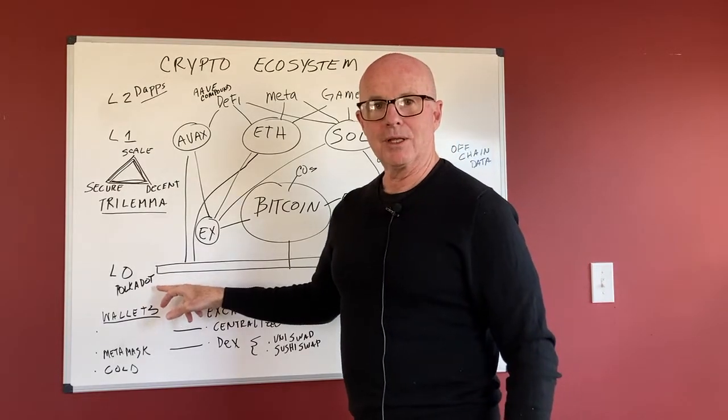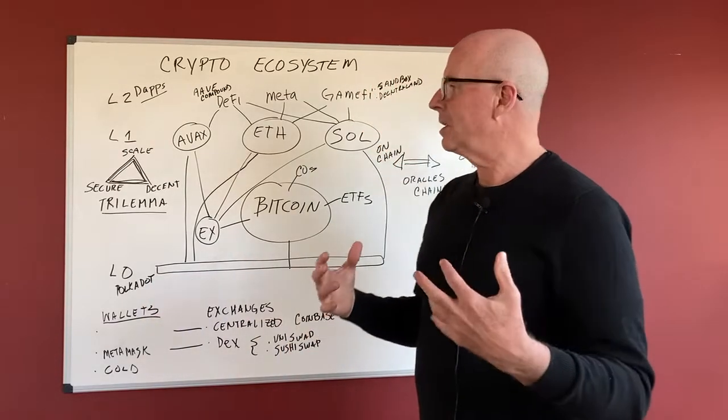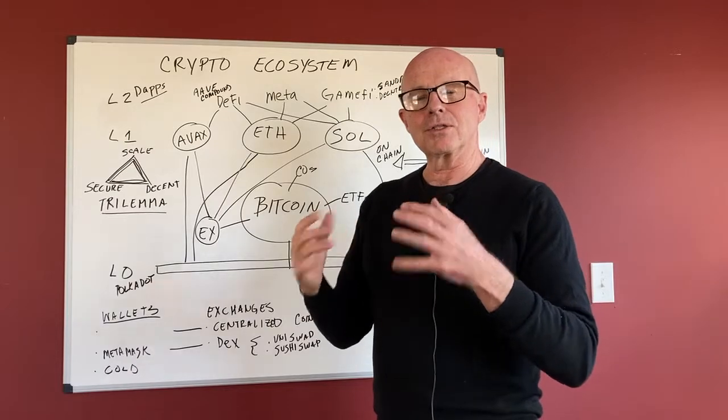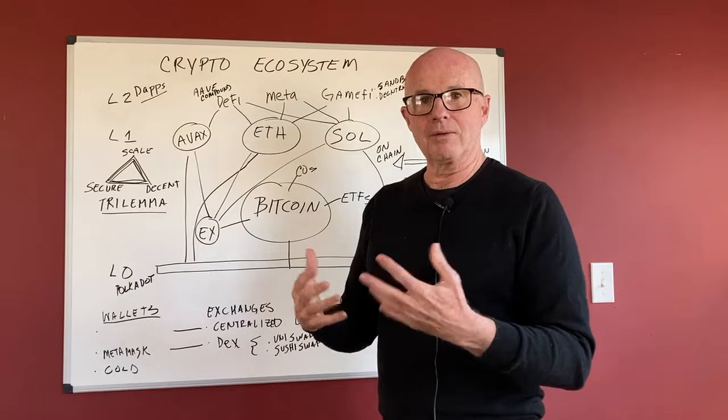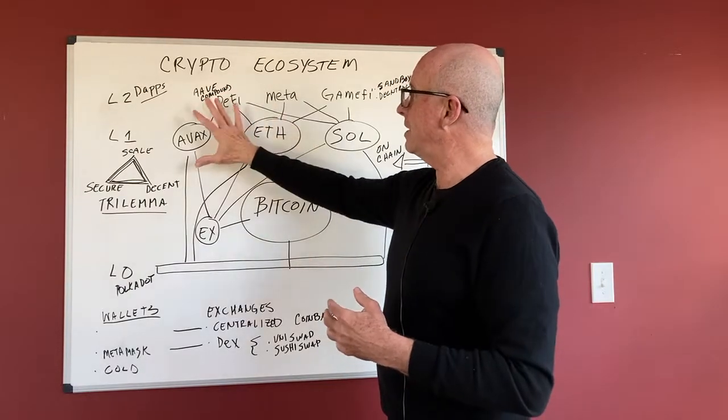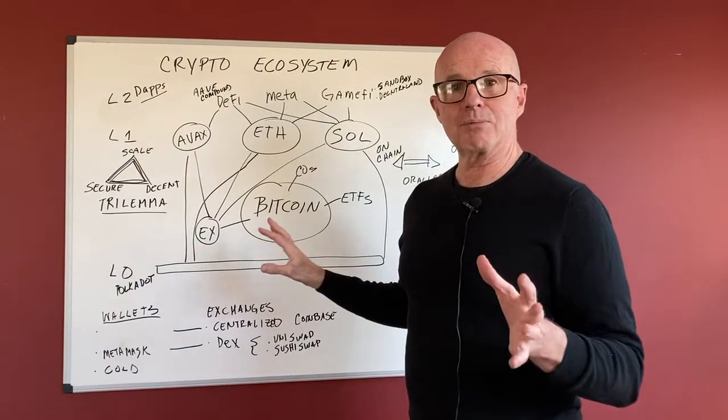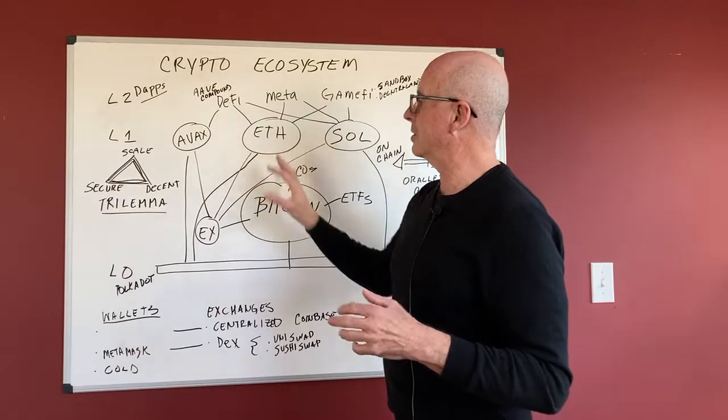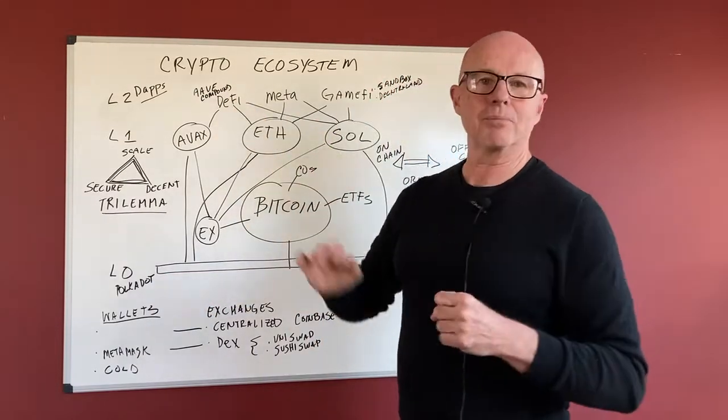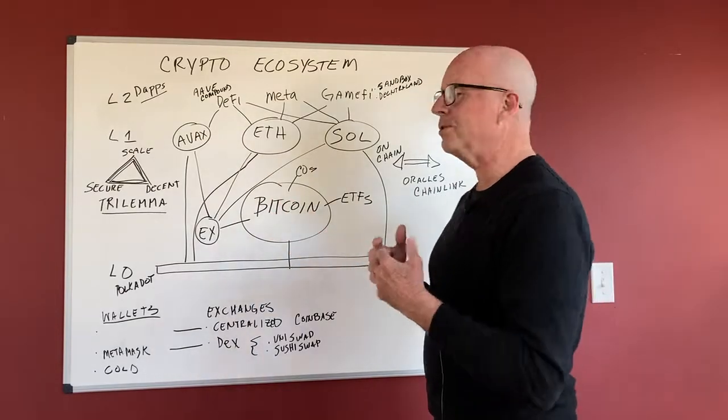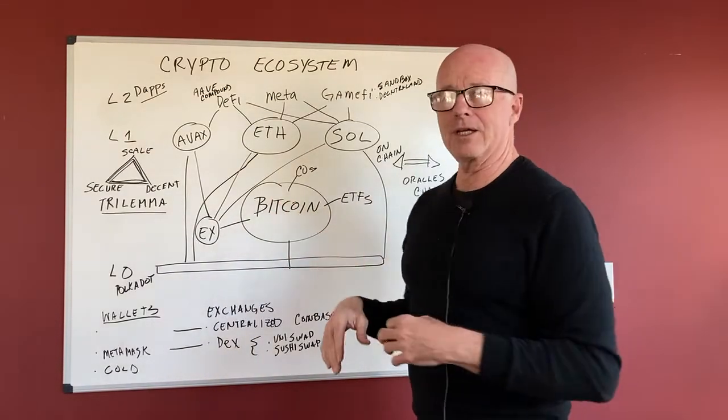Polkadot is the big one there. So now you start to see, you'll hear these names, you'll see what they do, what's the problem they're trying to solve? What is their application? And then you can fit it into this contextual type of format of, ah, I see what these guys are doing. They're either trying to layer zero or there's a new DeFi application or whatever. And you can start to understand how this all fits together.